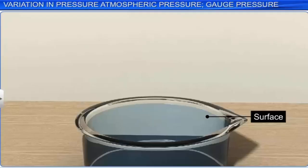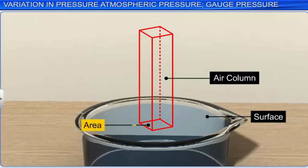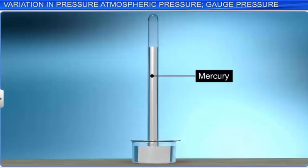Similarly, the atmospheric pressure at any point is equal to the weight of a vertical column of air of unit cross-sectional area extending from that point to the top of the Earth's atmosphere. Atmospheric pressure is measured in terms of a vertical column of mercury whose pressure at its bottom equals the atmospheric pressure. The greater the atmospheric pressure, the greater the vertical height of the mercury column.